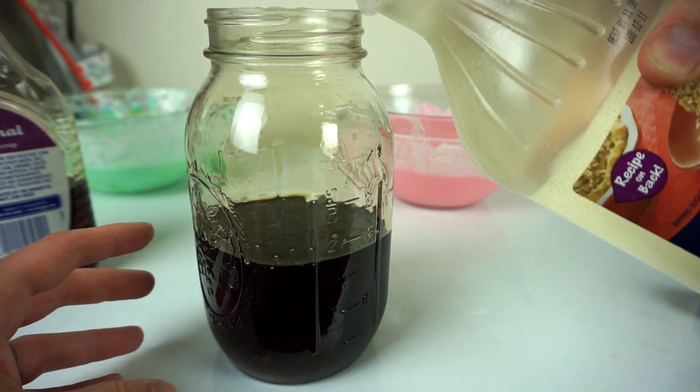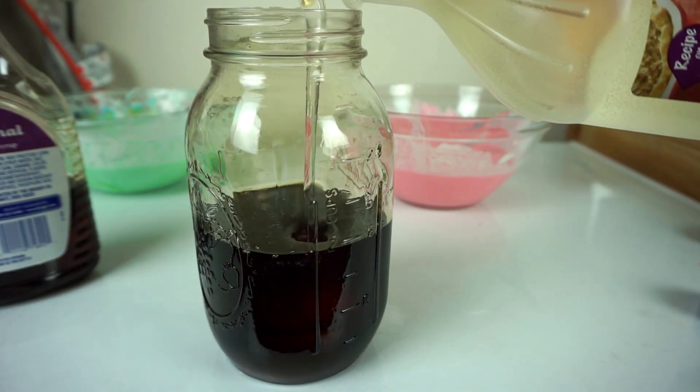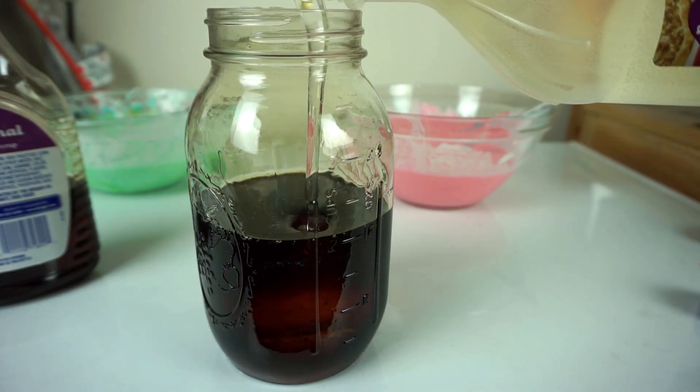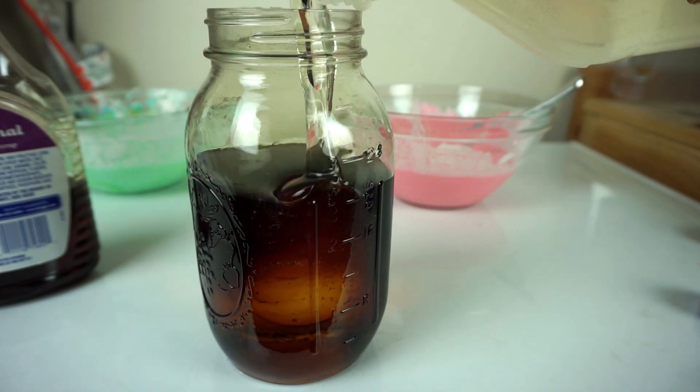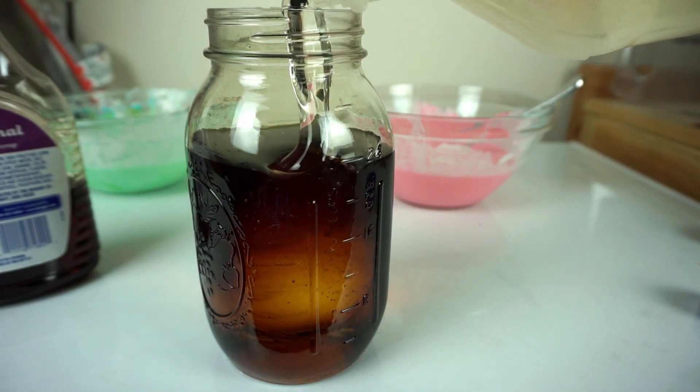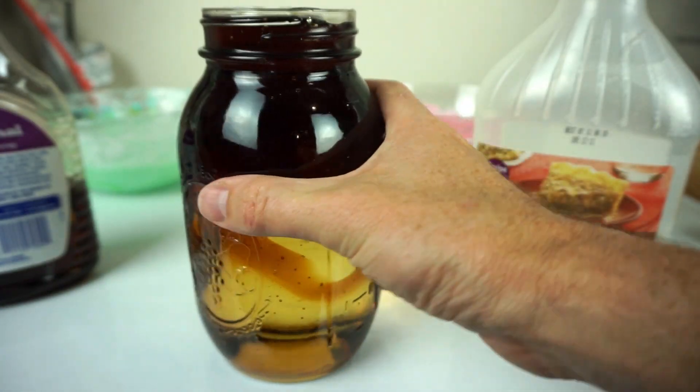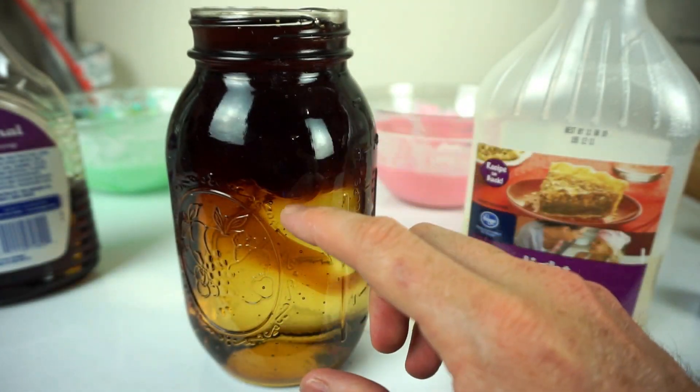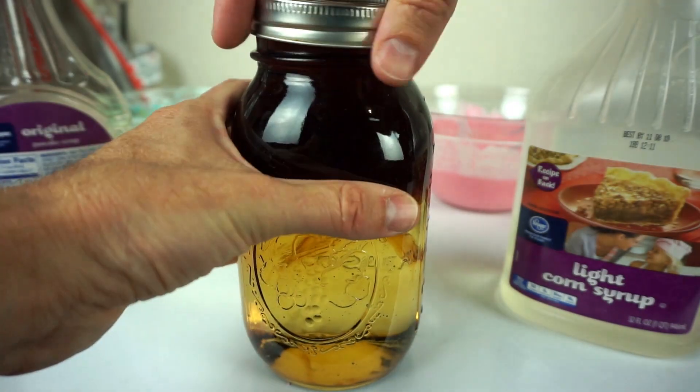Okay, let's try to pour in the light. So it looks like the light corn syrup is a little more dense so it's moving to the bottom here. Okay, let's cap it.